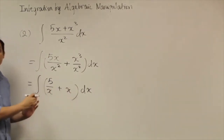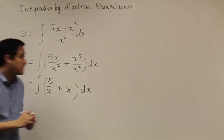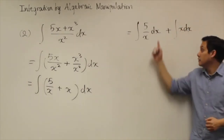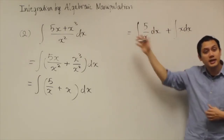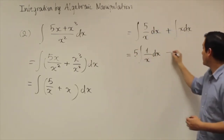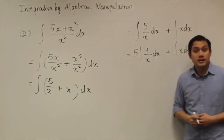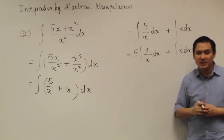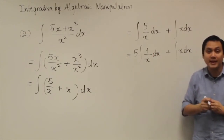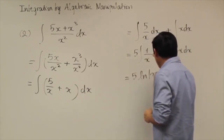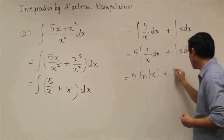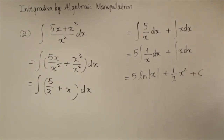So from here, you can separate into two different integrals to find the anti-derivative. For the first integral, 5 is the constant, so you can bring it out of the integral operation. You get 5 times the integral of 1 over x dx, plus the second integral. Remember, the anti-derivative of 1 over x is something special — it's not the power rule, it's the natural log of the absolute value of x. And for the second integral, the anti-derivative of x is one-half x squared. Don't forget the plus constant C at the end.